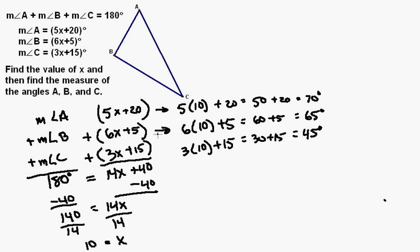Alright, so the measure of angle A is 70 degrees. The measure of angle B is 65 degrees. And the measure of angle C is equal to 45 degrees.